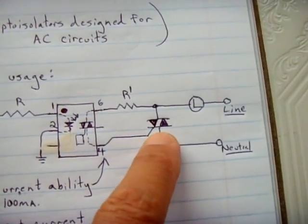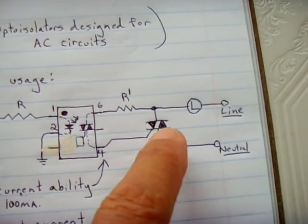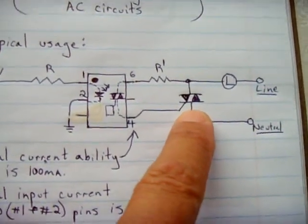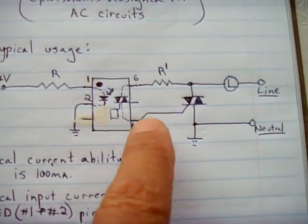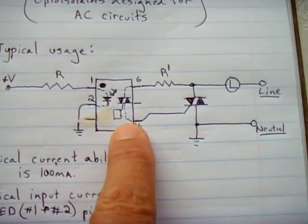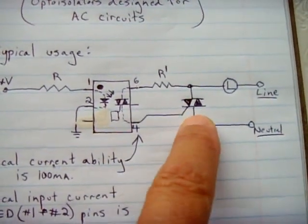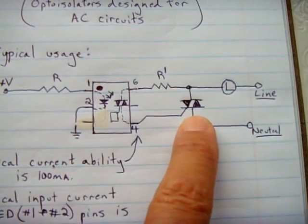You have to check the spec sheet to find out how much current is required for this particular triac. Keep in mind this only allows 100 milliamps to be used, so make sure you choose a sensitive gate so it doesn't require that much to trigger it.